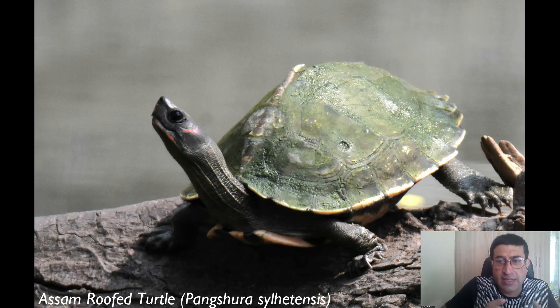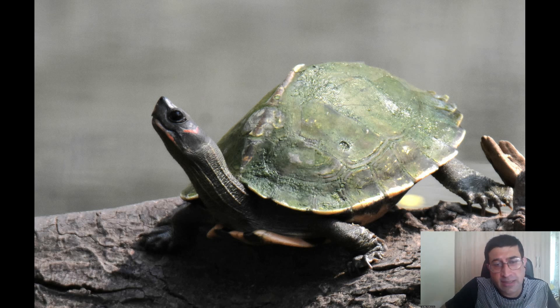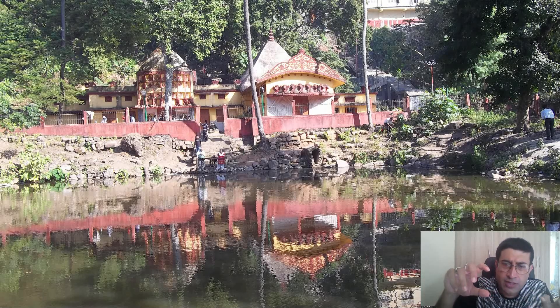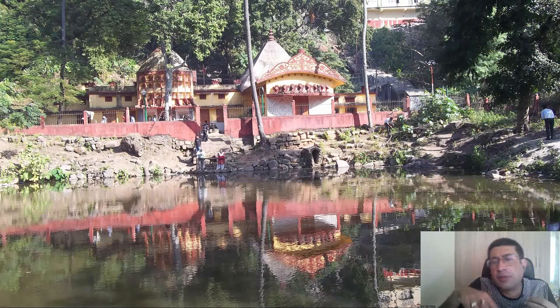Turtles in these ponds have no basking spots, unlike in natural settings, so they cannot regulate their metabolism. Also, wherever there is a small break in the concrete with soft ground, that ground is hard clay and pebbles rather than silt. When turtles go out to lay eggs, they can only dig a very shallow hole because they are accustomed to soft riverine silt. This hard clay means they cannot bury eggs to the optimum depth they need.